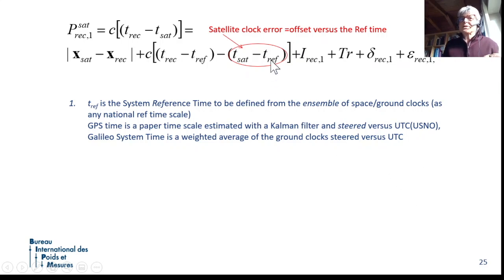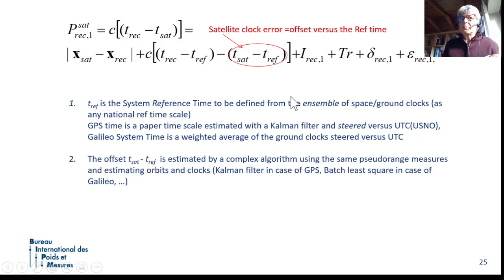So first, the algorithm is necessary to define the reference time. Then we need to estimate this offset. Once the satellite is on board, how can we know which is the offset of that remote clock with respect to the reference time, which is maybe on ground in the control center? So again, this quantity is estimated by using the pseudo-ranges.